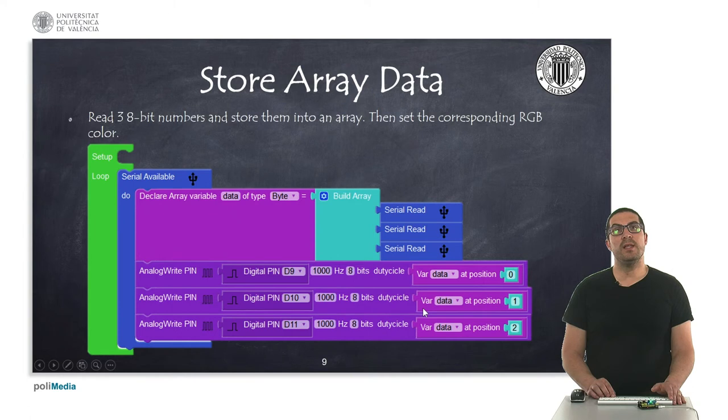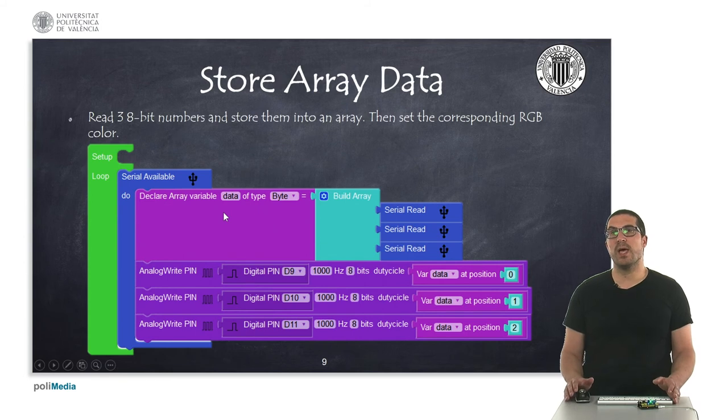And finally in this other example here what I'm doing is I'm reading three values, three byte values which correspond to the colors of our RGB LED. Whenever I have data available in the serial port I'm reading three, I'm performing three consecutive reads and I'm building an array with these values.